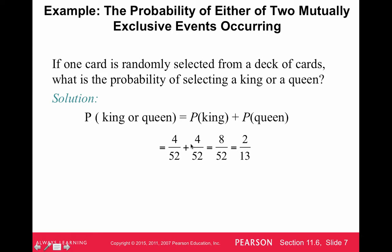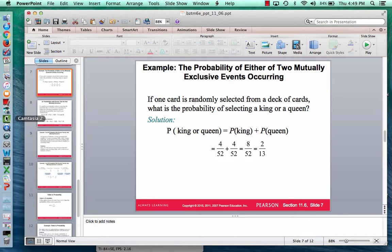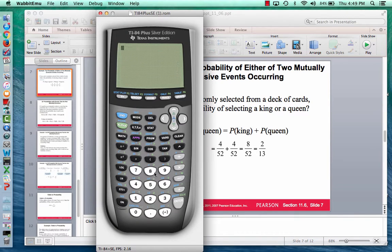We want to know the probability of winning if we get a king or a queen. We just add the probabilities of getting a king and a queen together. There are four kings out of 52 cards. There are four queens out of 52 cards. We add those up. When you add fractions, you have to have a common denominator. 4 plus 4 is 8 over 52. 8 over 52 reduces to 2 out of 13, or 15.4 percent probability that you get a king or a queen.